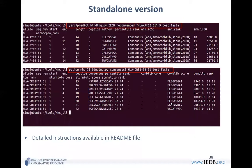Here is a sample command for the standalone version. For class 1 prediction, you call predict_binding.py, provide the method — here I'm choosing IEDB recommended — then the allele, peptide length, and input file, and you get prediction results you can export to an output file. For class 2, it's almost the same, but since the length is fixed at 15 you don't have to provide the length. Very detailed instructions are available in the readme file downloadable with the tool package.